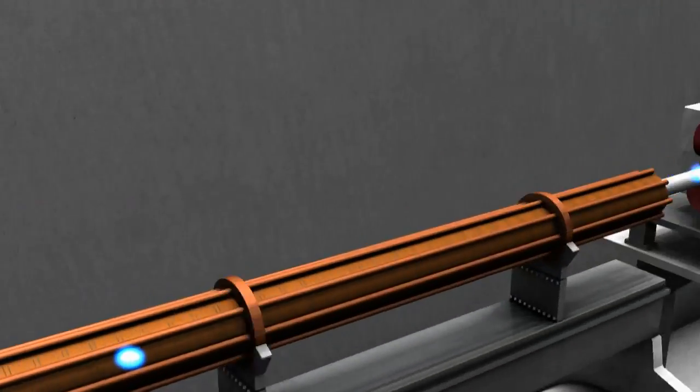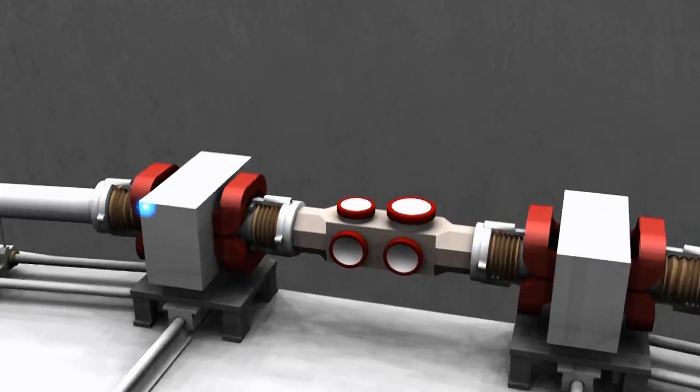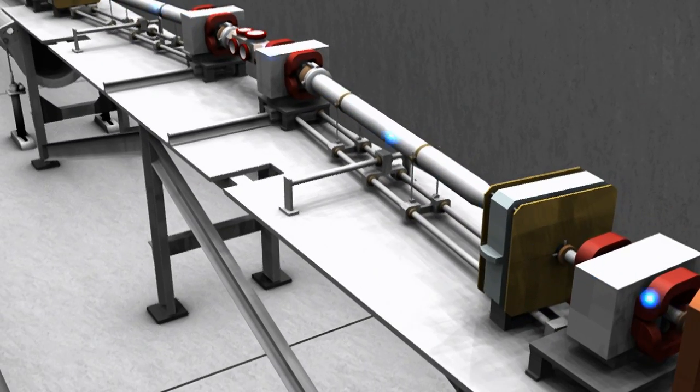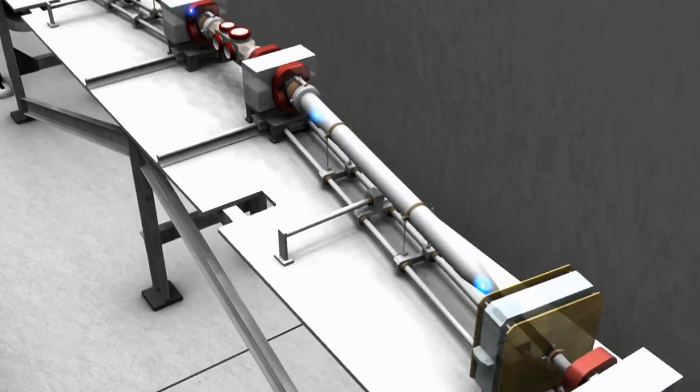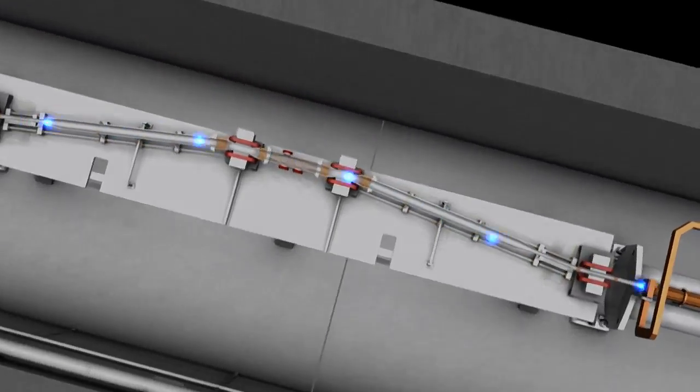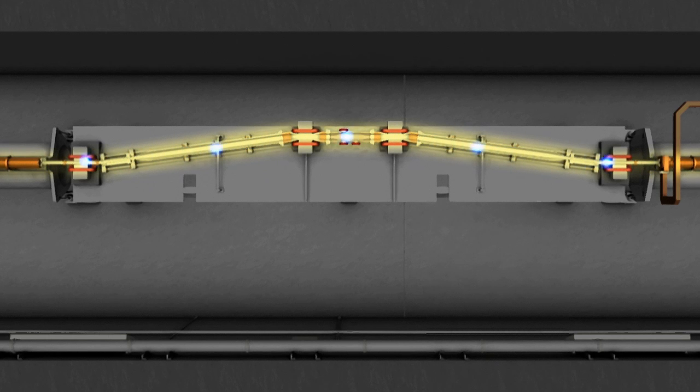Inside the accelerator, the electron bunch encounters the first of two magnetic chicanes, or bunch compressors. These chicanes help even out the arrangement of electrons of different energies in each pulse by sending the pulses along a slight S-curve.